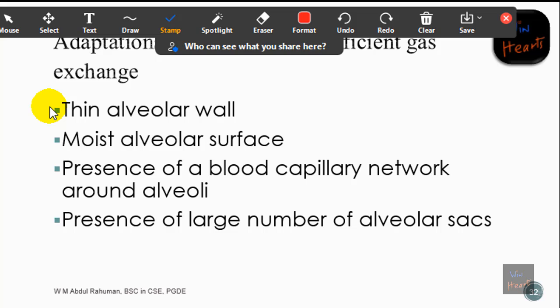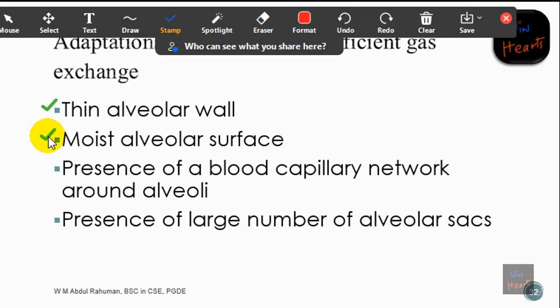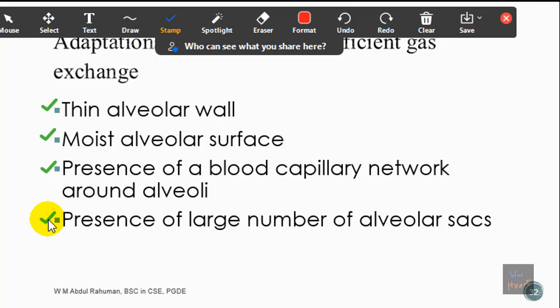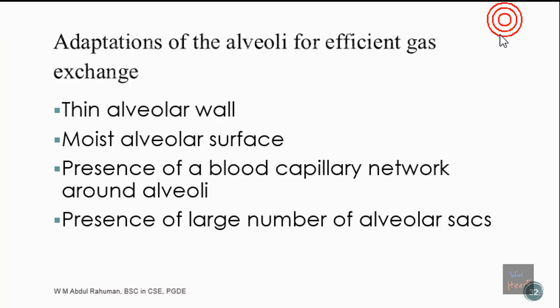Now let's confirm that alveoli meet these requirements. The alveolar wall is thin — just one cell in thickness — which is good because it makes diffusion easier. It is also moist, which helps permeability for gases. There is a capillary blood network around the alveoli so gaseous waste can leave and oxygen can enter the blood. Finally, there are a large number of alveolar sacs, giving a large total surface area that facilitates efficient and high-quantity gas exchange.